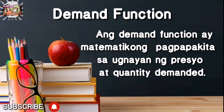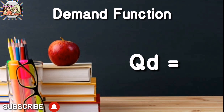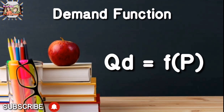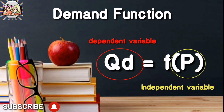Ang demand function naman ay matematikong pagpapakita sa ugnayan ng presyo at quantity demanded. Maaari itong ipakita sa equation na QD equals f(P). Ang QD o quantity demanded ang dependent variable at ang presyo na P ang independent variable. Ibig sabihin, nakabatay ang quantity demanded sa pagbabago ng presyo. Ang presyo ay nakapagpapabago sa dami ng handa at kayang bilhin ng mga mamimili.